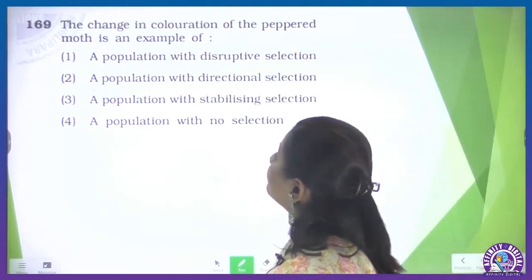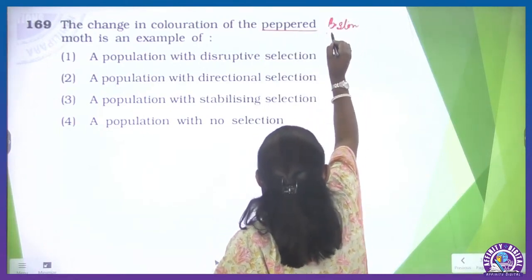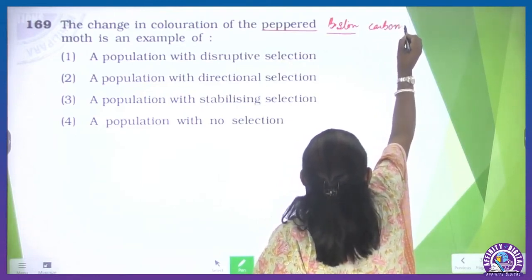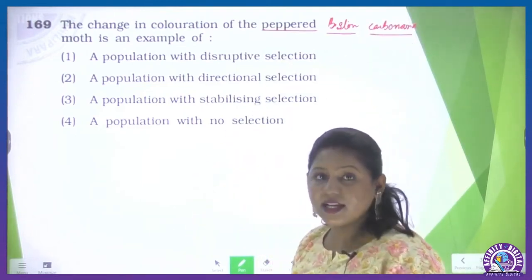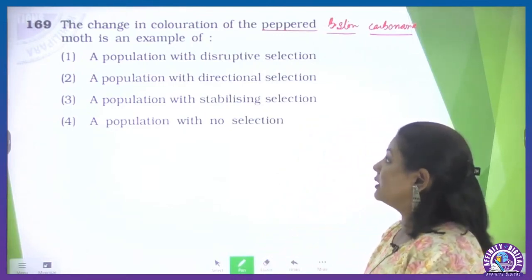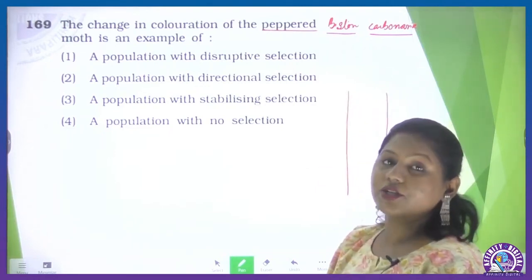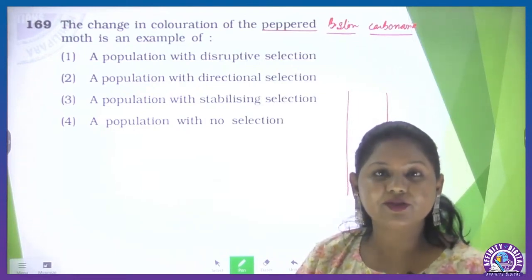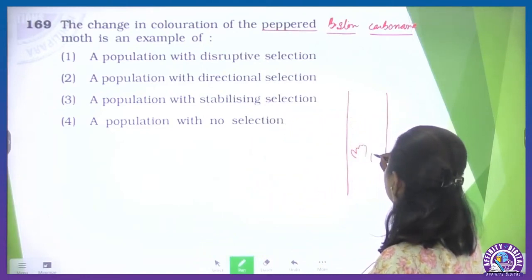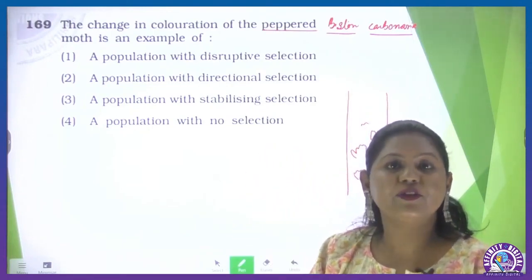The change in coloration of the peppered moth — Biston betularia / Biston carbonaria, also known as melanized moth or dark-winged moth — is an evolution example. When England had no industrialization, the eucalyptus trees were quite clear. Due to less pollution, lichen developed on the trees, making the tree trunk white because of lichen growth.